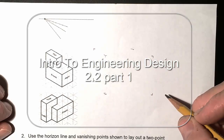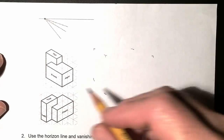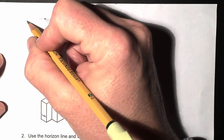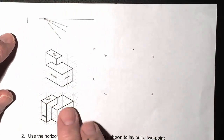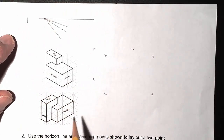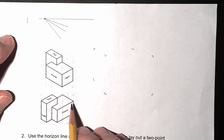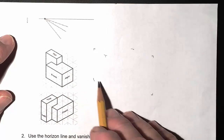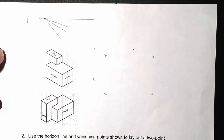Okay, so this is exercise 2.2 in IED. This is actually number one — we're missing a number here, but we're going to draw this part in a one-point perspective view.